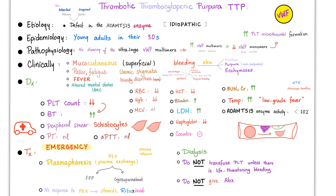TTP etiology: defective ADAMTS13 enzyme — could be a deficiency if inherited, or an inhibitor if acquired. Epidemiology: young adults in their 30s, most of the time. Pathophysiology: no cleaving of the ultra-large von Willebrand factor multimers leads to persistence of large, hyperactive multimers, which leads to increased platelet microthrombi formation. Clinically, thrombocytopenia leads to mucocutaneous or superficial bleeding, although this is rare.